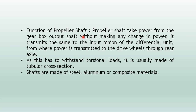So the transmission path goes from engine to transmission, then through the propeller shaft using universal joints, constant velocity joints, and slip joints, then to the differential, then to the axles, and finally to the road wheels.